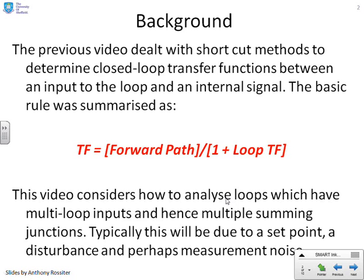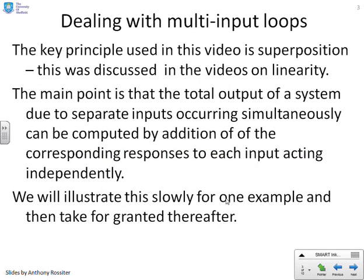Now this video is going to look at what happens when a feedback loop has several inputs coming into the loop and hence it will have multiple summing junctions. Typically this will happen where you maybe have a target as one input and then disturbances and measurement noise as other inputs. The key principle we want students to learn in the long term is that they can use superposition. The concept of superposition was covered in the videos on linearity, so please check there if you've forgotten. The main point is the total output of a system due to separate inputs occurring simultaneously can actually be computed by calculating the responses to each input separately. So as if only one input was happening you calculate the output, and then if another input is happening you calculate the corresponding output and then you can just add the two together. We're going to illustrate this slowly for one example and then we'll take it for granted for the future examples.